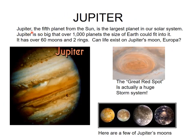Jupiter is the fifth planet from the Sun and is the largest planet in our solar system. Jupiter is so big that over 1,000 planets the size of Earth could fit into it. It has over 60 moons. The Great Red Spot is a huge storm system on Jupiter.